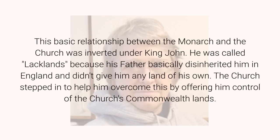This basic relationship between the monarch and the church was inverted under King John. He was called Lacklands because his father basically disinherited him in England and didn't give him any land of his own. The church stepped in to help him overcome this by offering him control of the church's commonwealth lands.